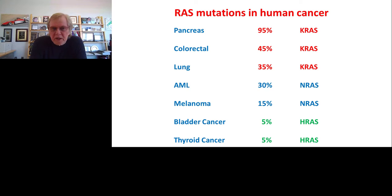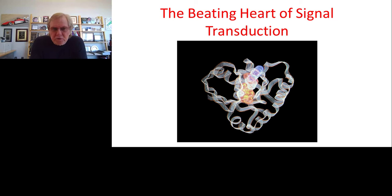We are determined to find molecules that bind to KRAS and block its function by direct interaction. The RAS protein has been described as the beating heart of signal transduction, partly because the protein is heart-shaped, and also because during its normal function it moves back and forth between two configurations — an on-state and an off-state, just like a beating heart. All growth factors that signal into cells do so through the RAS protein.